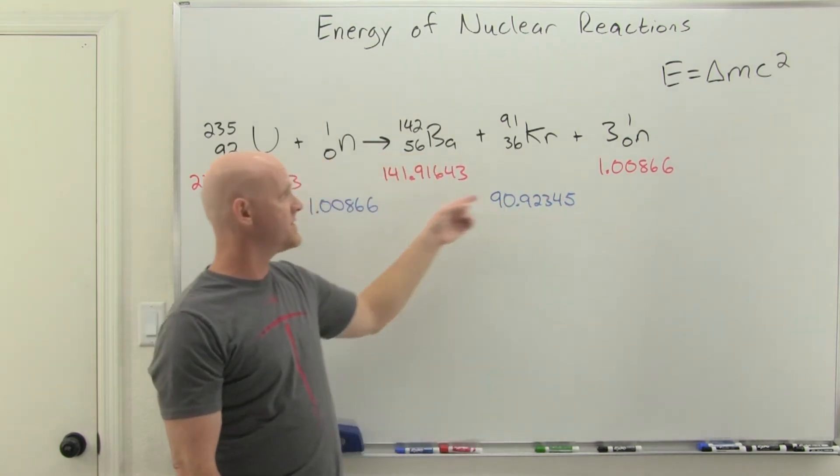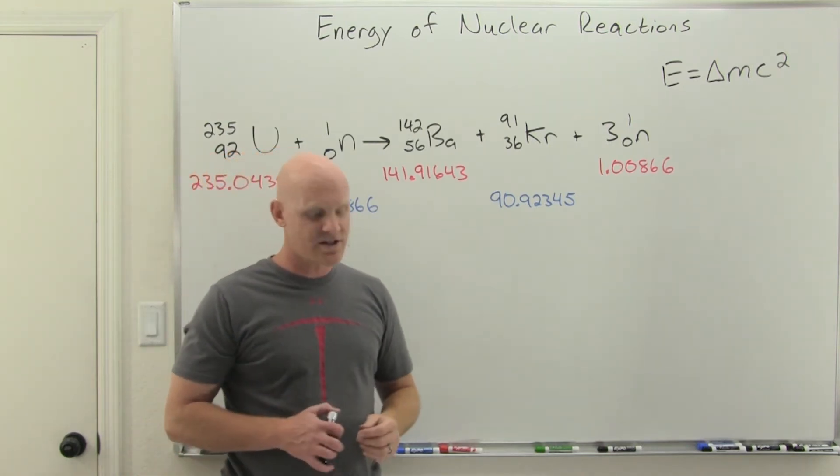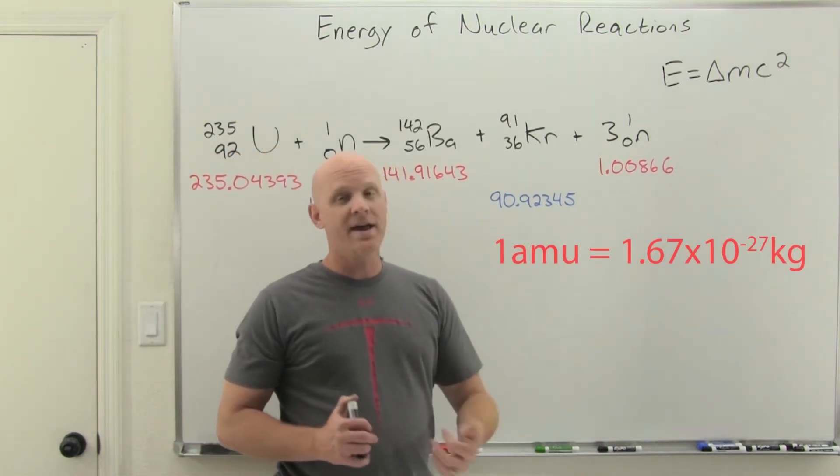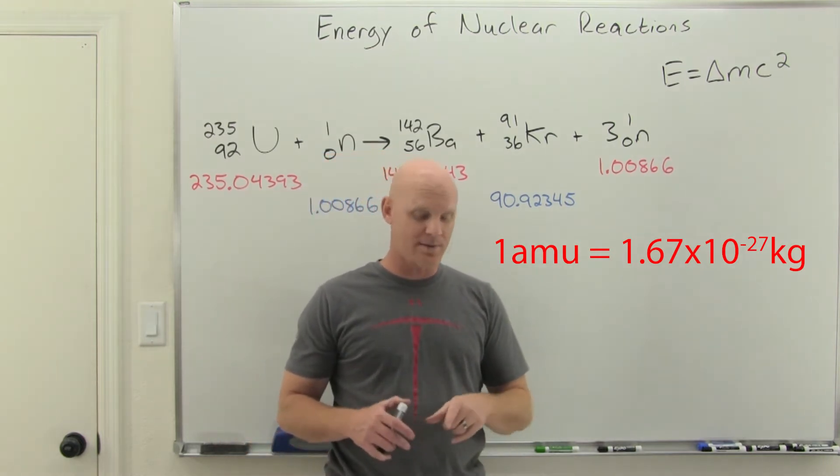We're going to look at all these masses individually in atomic mass units, AMUs, and we'll use the conversion that's provided on your handout: one AMU equals 1.67 times 10 to the negative 27 kilograms, right off the study guide there.